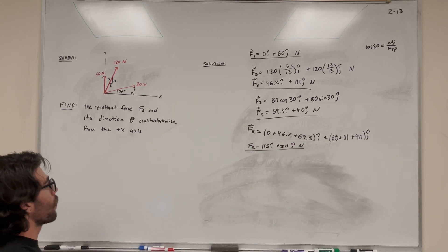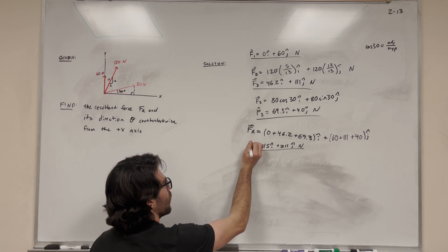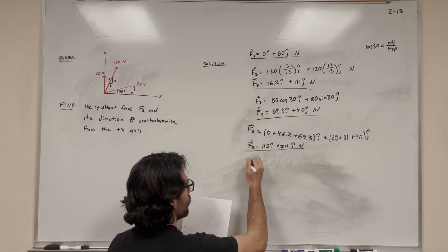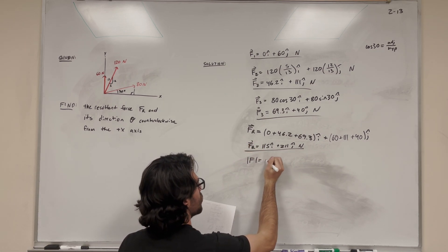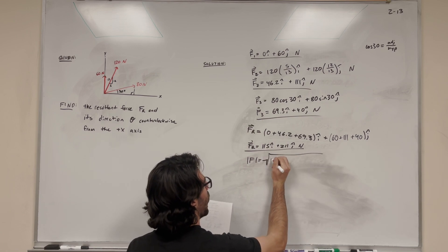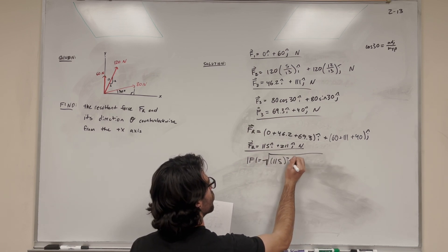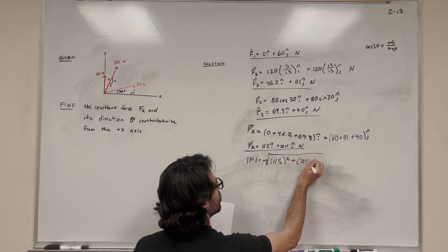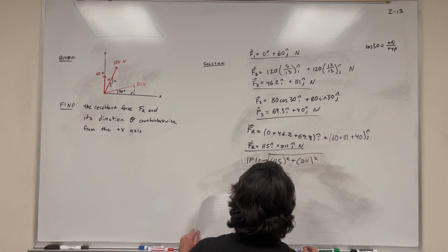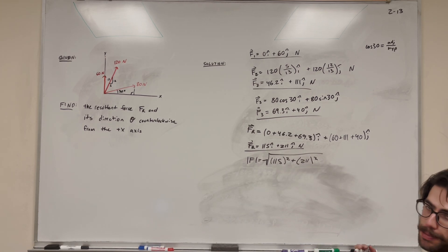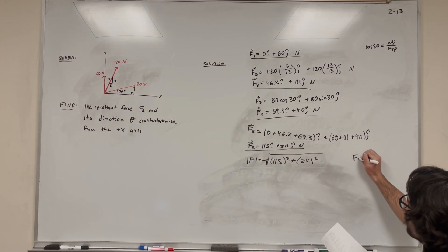Alright, so we're looking for the resultant force. We wrote it as a vector, but we want to write it as a magnitude. So the magnitude of a force is just equal to the square root of the i component squared, so 115 squared plus the j component, 211 squared. Alright, so this is just the Pythagorean theorem. a squared plus b squared equals c squared. So we're going to get that force resultant is equal to 240 newtons. And there is one of our answers.